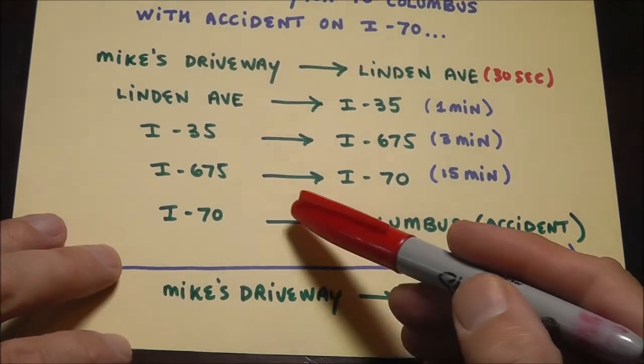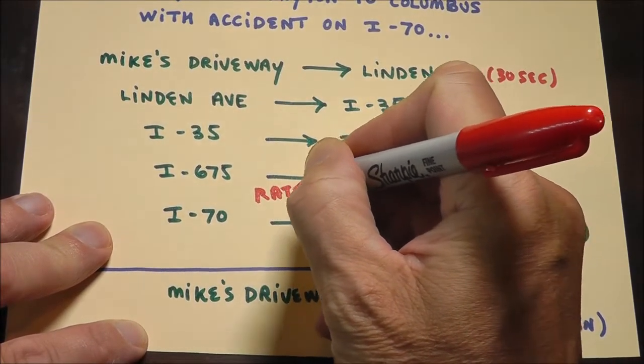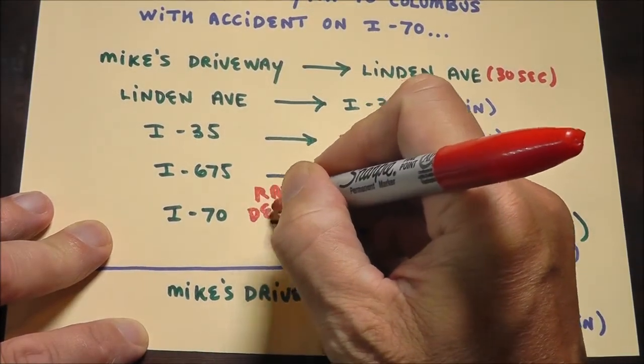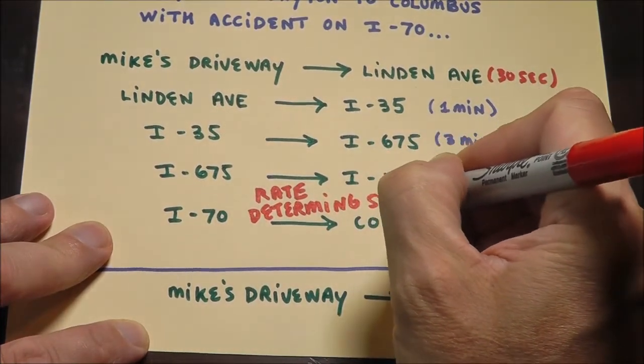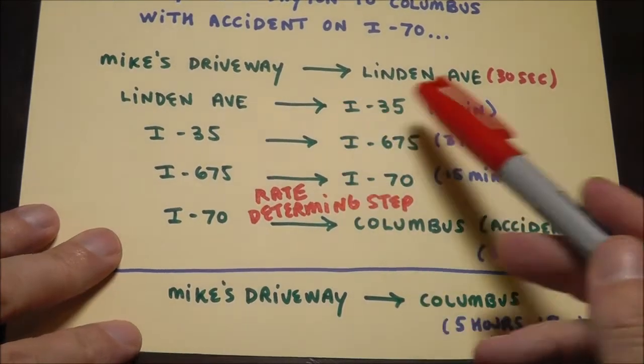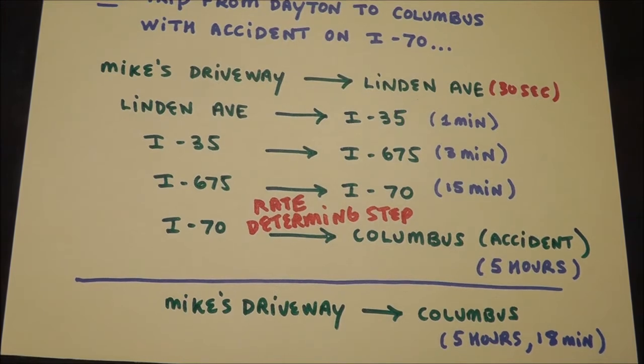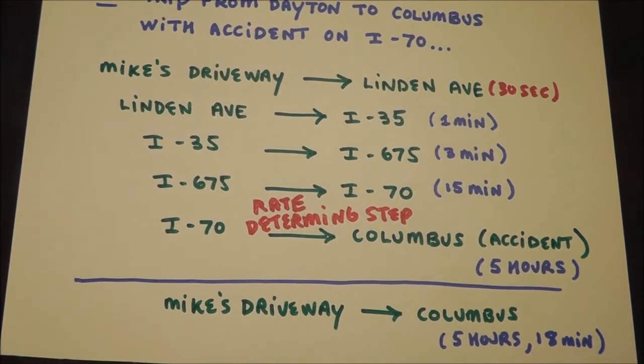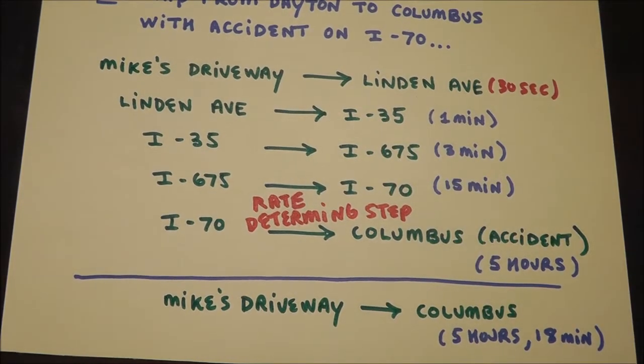That time I sat on I-70 is what we call the bottleneck of the reaction or we call this the rate determining step. The bottom line is if I had sped up that step I could have gotten to Columbus much quicker. What if I had sped up any of the other steps? Well I could have just hauled booty right out of my driveway, maybe hurt a kid or something on his bike, but that wouldn't have helped any.